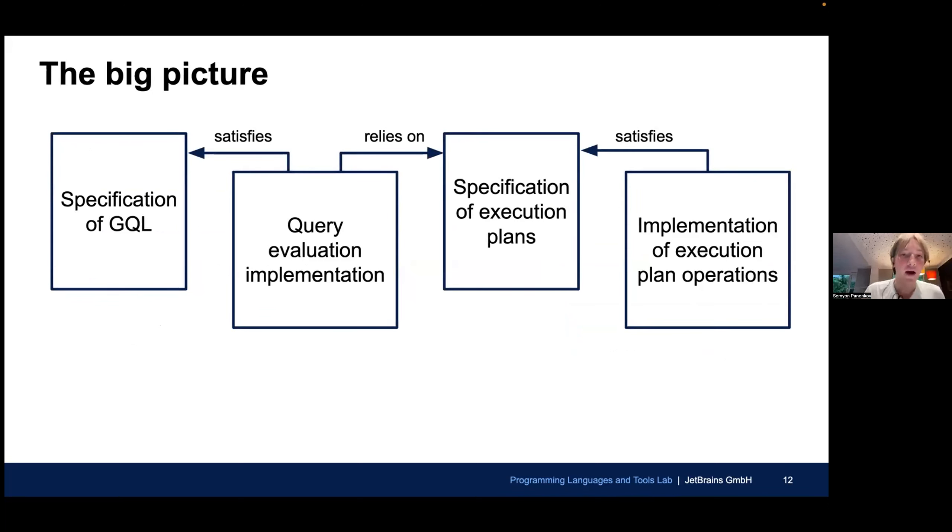Taking everything in account, we have come with the following big picture of our project. We have two specifications, the specification of GQL, of our core subset, and the specification of execution plans. Between those two specifications, there is a query evaluation, which, as we have already discussed, is basically translation algorithms from queries to execution plans. This implementation satisfies the specification of GQL. In other words, that evaluation behaves as expected, as has been described. But it relies on specification of execution plans. It expects that the thing that evaluates the execution plans, it evaluates as has been specified.